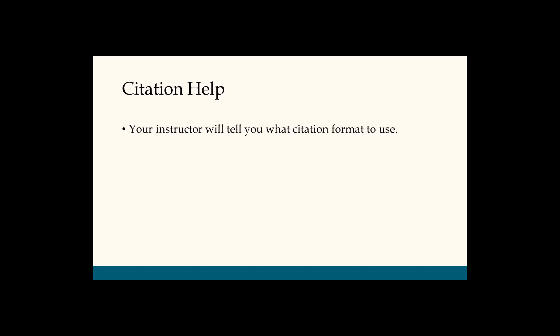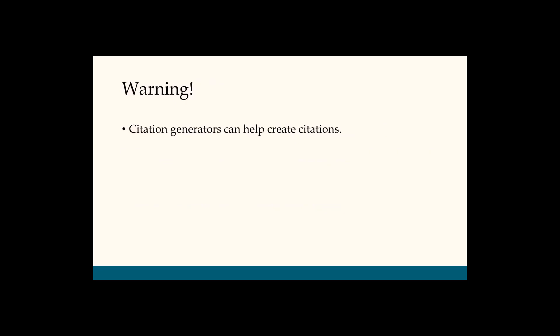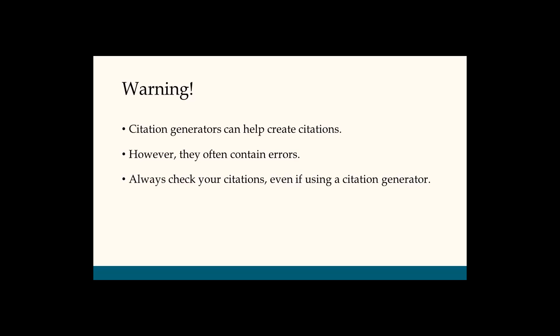Accurately formatting citations can be tricky, but luckily there is help. Your instructor will tell you what format to use, usually either APA, MLA, or Chicago style. Once you know which format you're using, there are online and print materials that will tell you how to cite a variety of sources. There are also writing tutors and librarians on campus who can help you get it right. As a note, if you choose to use a citation generator to create your citations, remember that the citations they give you will often contain errors, so you always want to check those citations to make sure they're accurate.